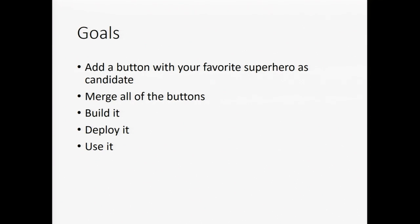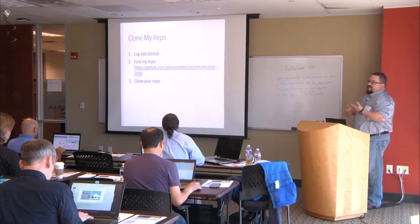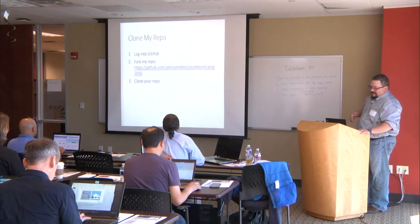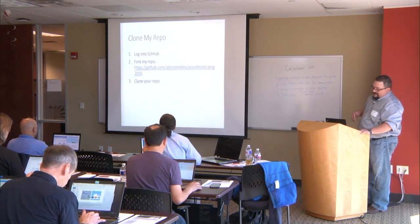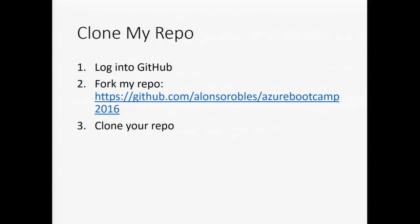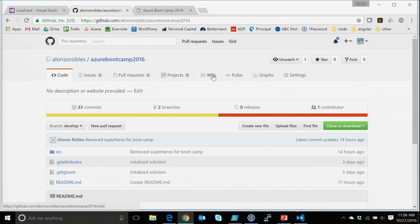All right, step one: clone my repo. Go log into GitHub. This is the hands-on part — I wish I had a handout but I did not prepare one. We're going to go to GitHub and you guys are going to go to this URL: github.com/AlonzoRobles — A-L-O-N-Z-O-R-O-B-L-E-S — /azure-bootcamp-2016. Go fork my repo.